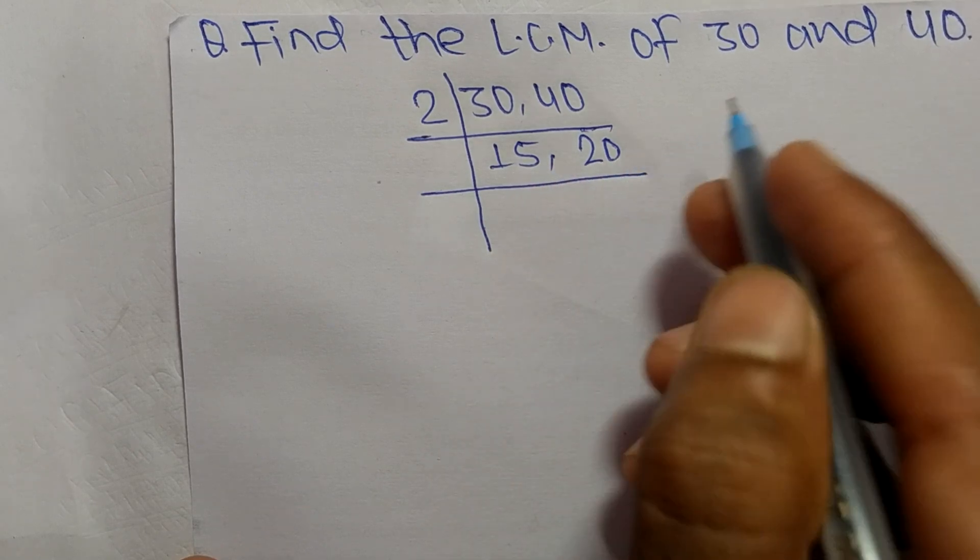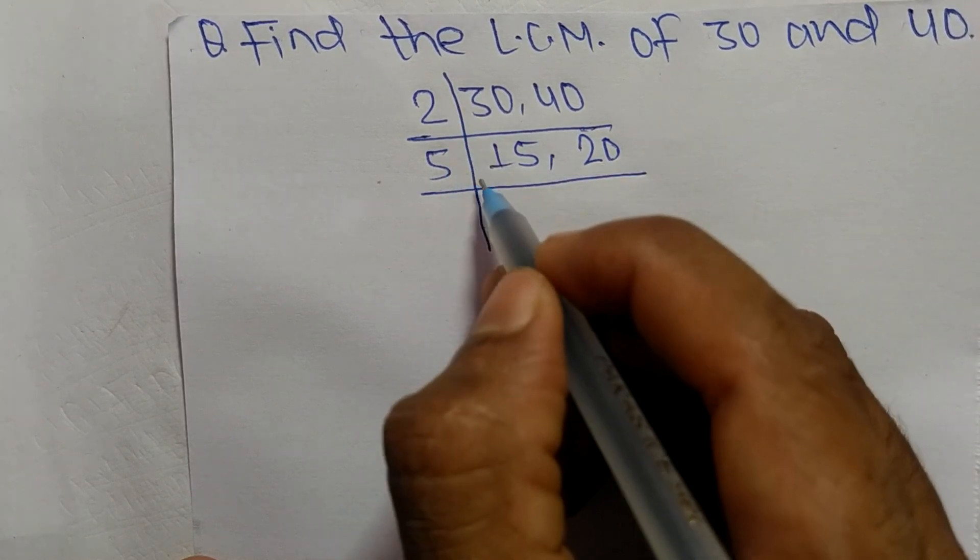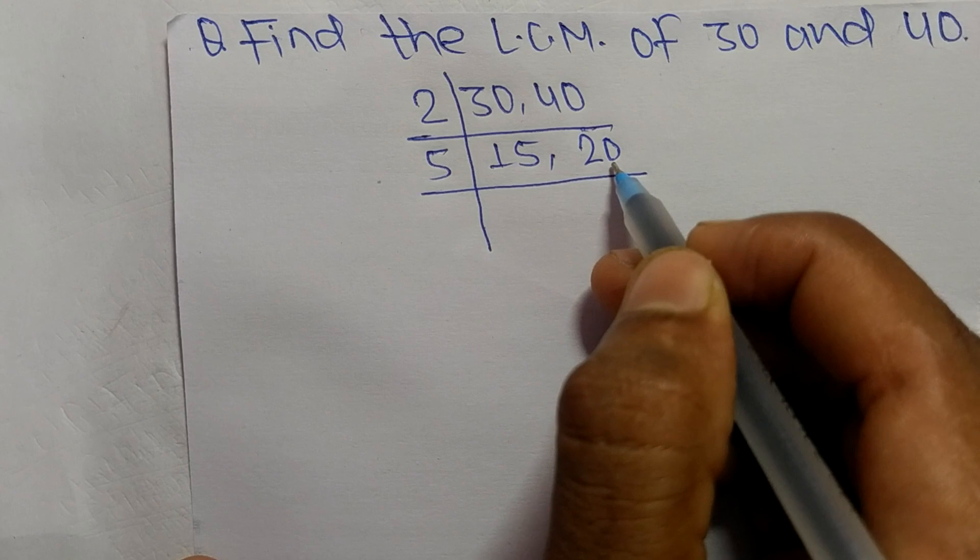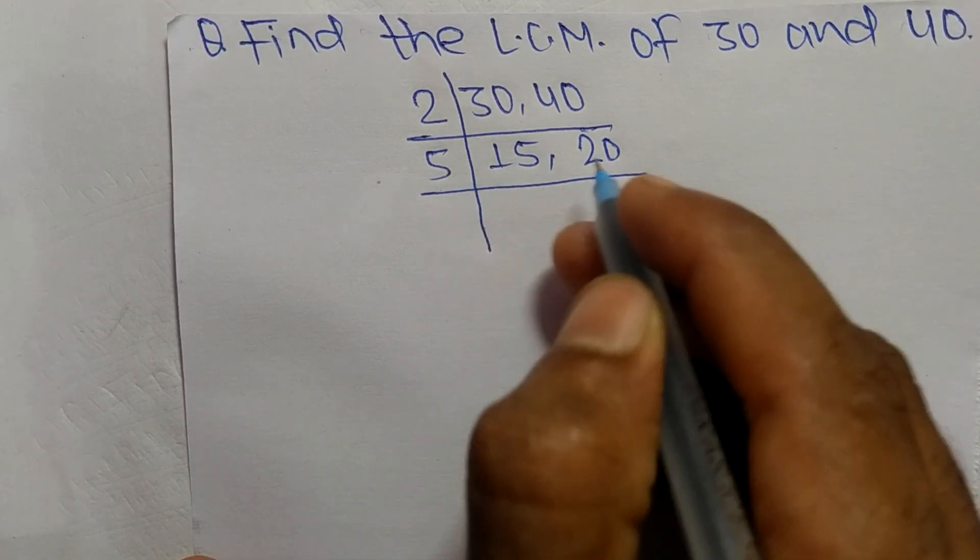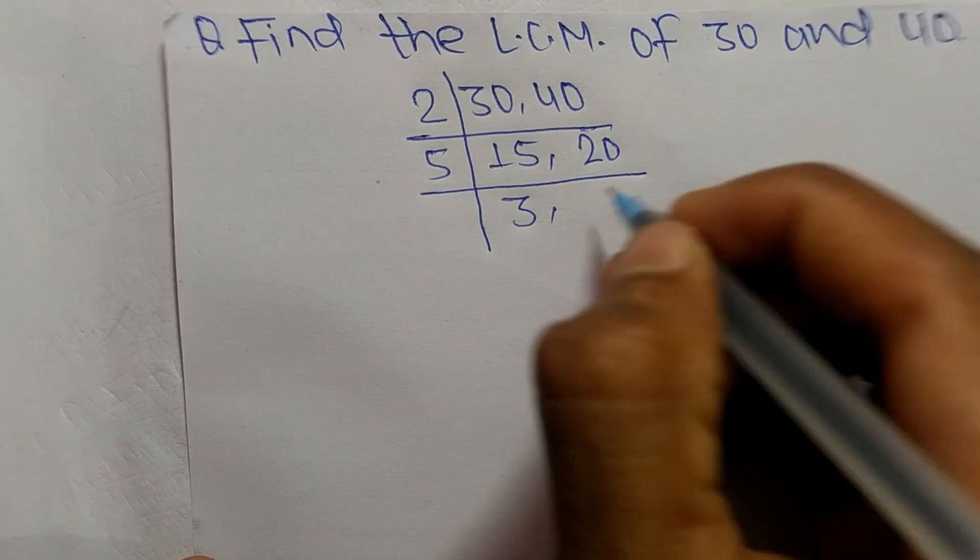So the number is 5. When we choose 3, then 3 can divide 15 but can't divide 20, so we choose 5. And 5 times 3 means it is 15, and 5 times 4 means it is 20.